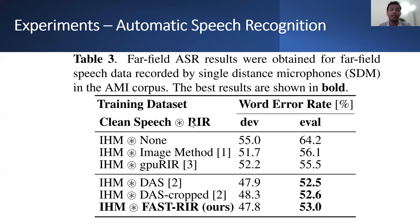In this table, we present the far-field speech recognition development and test word error rate for far-field SDM data. We can see that our fast RIR outperforms GPU RIR by up to 2.5 percent absolute word error rate. The room impulse responses from the diffuse acoustic simulator and fast RIR have the same duration and performed similarly in our automatic speech recognition experiment, and the difference in accuracy between them is not significant.